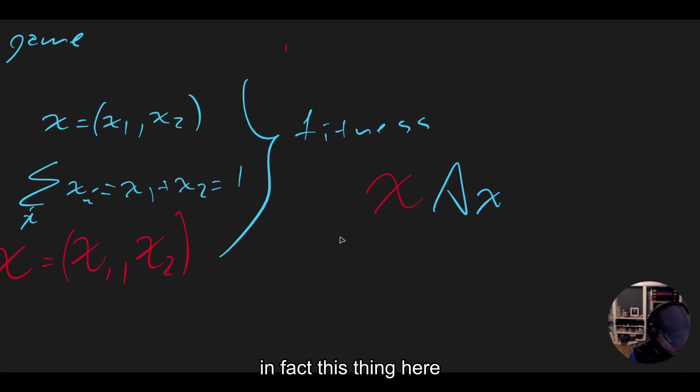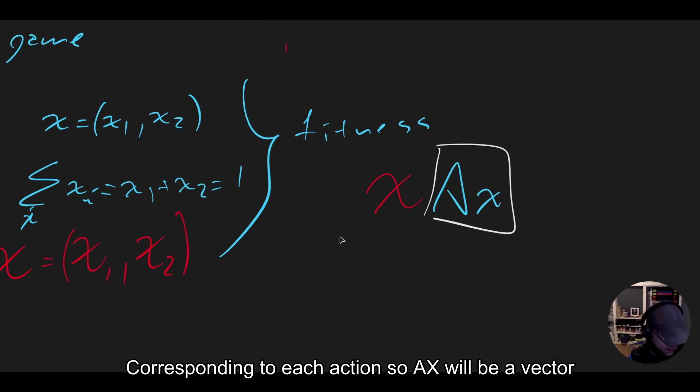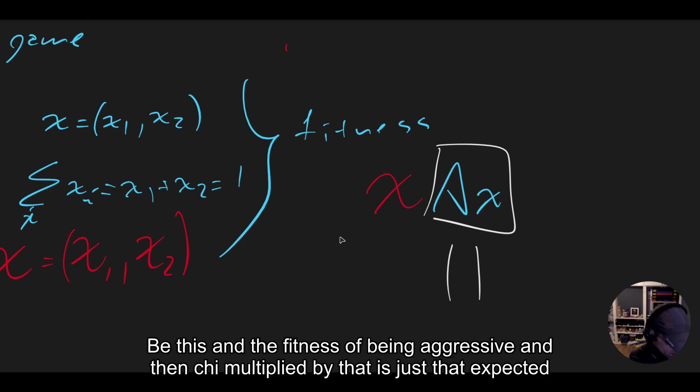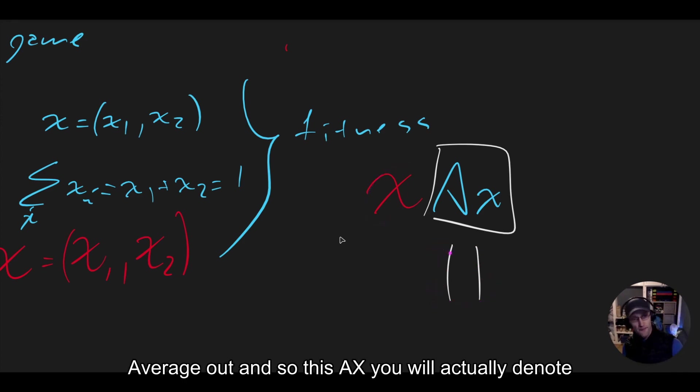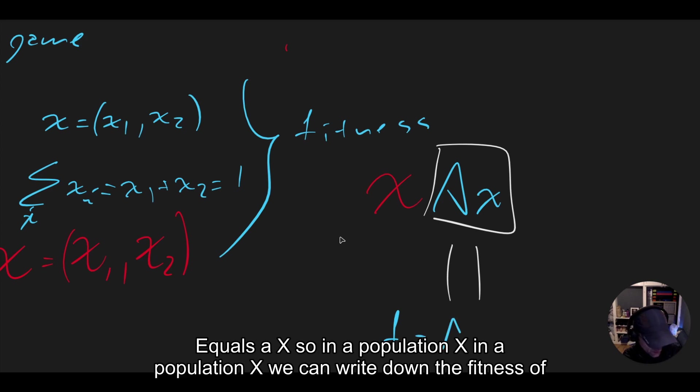In fact, this thing here, AX will give you the fitness corresponding to each action. So AX will be a vector, which will correspond to the fitness of being a sharer, which will be this, and the fitness of being aggressive. And then chi multiplied by that is just that expected average out. And so this AX, we will actually denote with F equals AX.